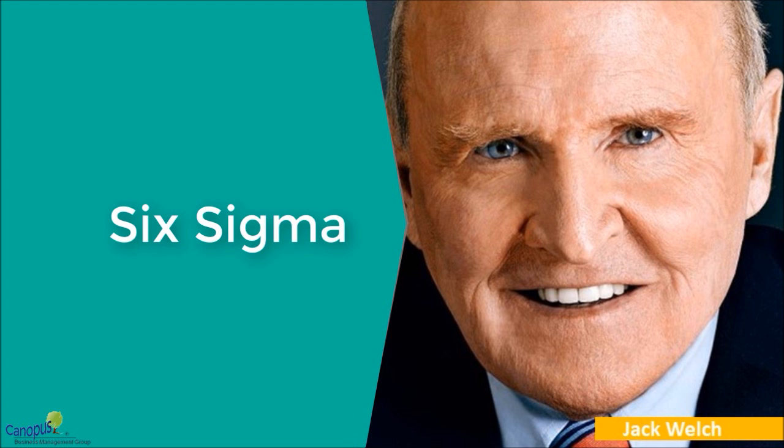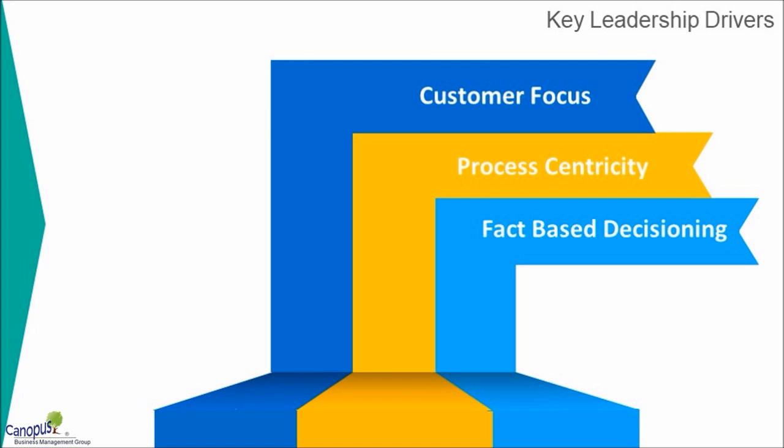So what are the key themes of Six Sigma? Let's touch upon that briefly. Six Sigma has three key themes: first being customer focus, process centricity, and fact or data-based thinking. All these three in one way or another relate to the seven points that we talked about earlier.